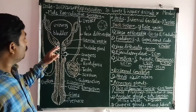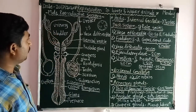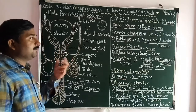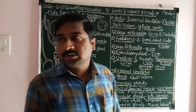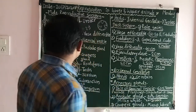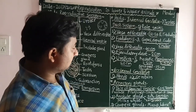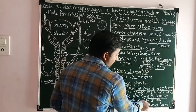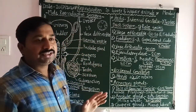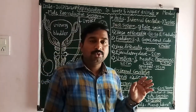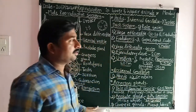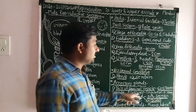The prostate gland is a triangular gland present below the urinary bladder which surrounds the prostatic urethra. It has about 20 to 30 lobules which open separately into the prostatic urethra. The prostatic gland secretes prostatic fluid, which forms about 30% of the semen.